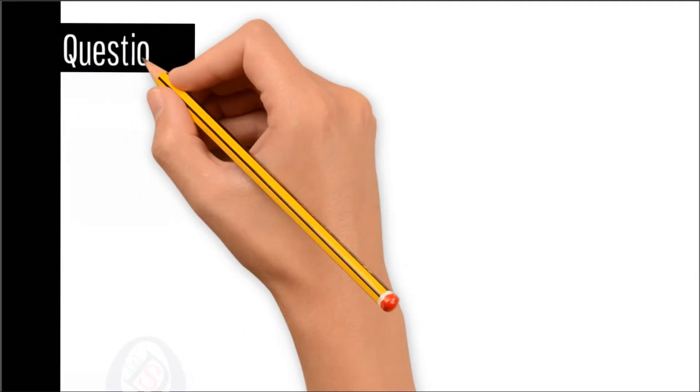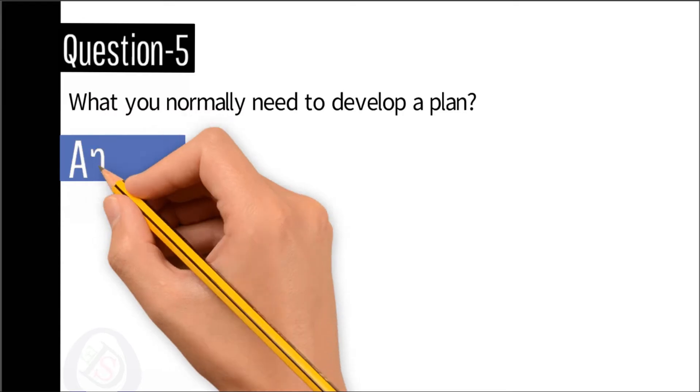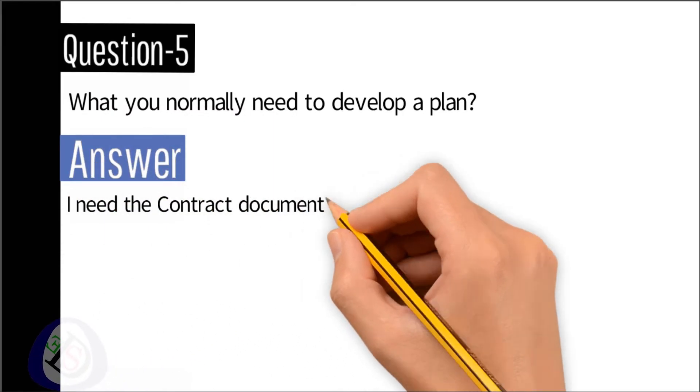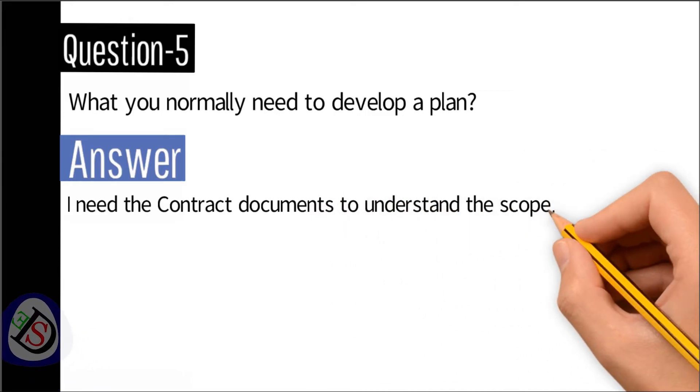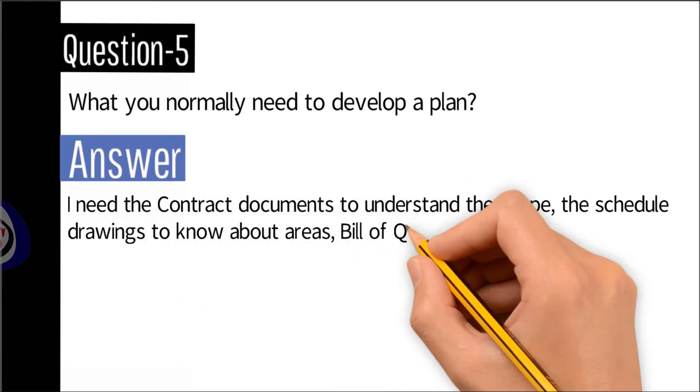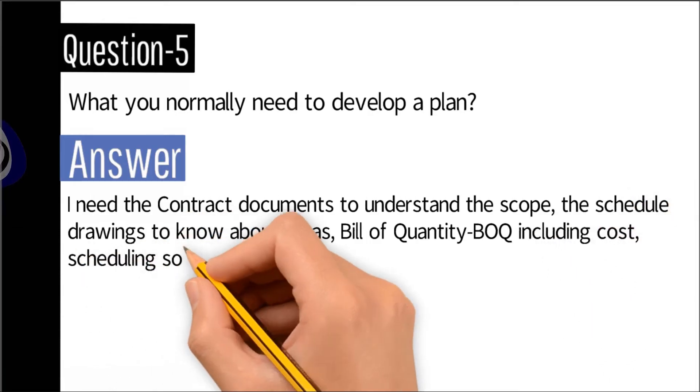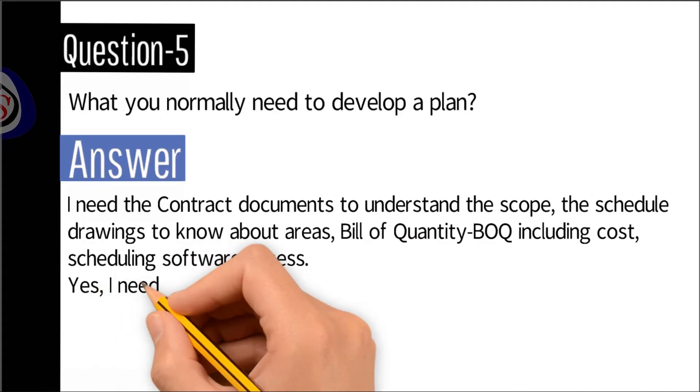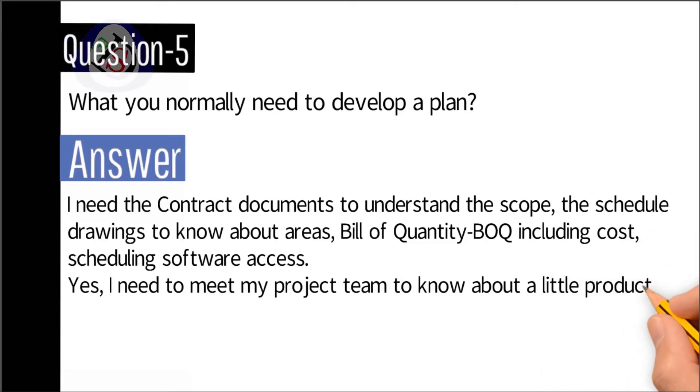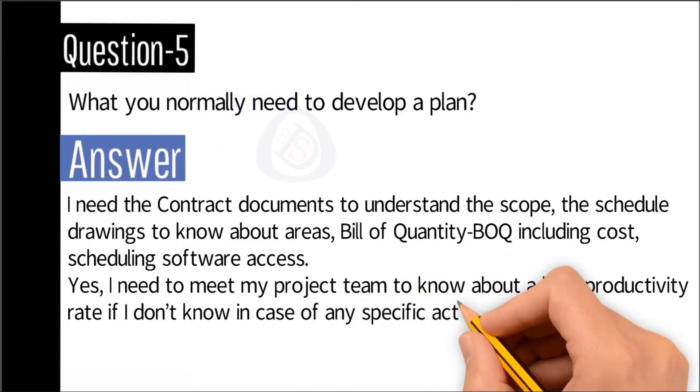Question number five: What do you normally need to develop a plan? Answer: I need the contract documents to understand the scope, the schedule drawings to know about areas, and the productivity rate if I don't know in case of any specific activity.